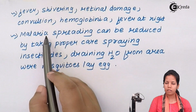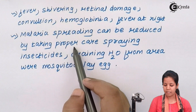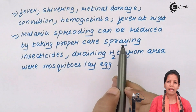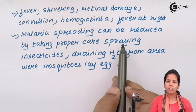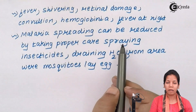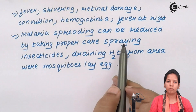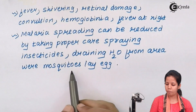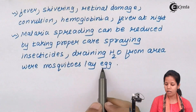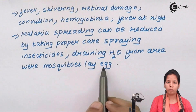Malaria can be prevented by taking proper care, such as spraying insecticides in areas prone to protozoa, making sure there is no stagnant dirty water remaining at locations where people reside, as malaria parasites can harbor there to a great extent. Also, wherever mosquitoes lay eggs or reproduce, those areas or water-containing vessels should be cleaned properly.